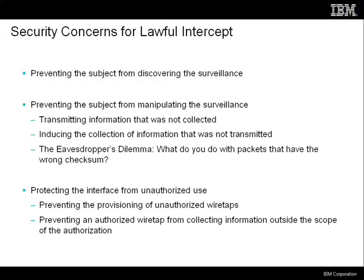That's the basic overview of how this lawful intercept architecture works. Let's consider the security concerns associated with building something like this. The first is preventing the subject from discovering the surveillance — Cisco's RFC discusses not having a device that shows up in a trace route so you know you're being surveilled. Another concern is preventing the subject from manipulating the surveillance, either by evading it, transmitting content that wasn't collected, or by confusing it — inducing the collection of information that was not actually transmitted.